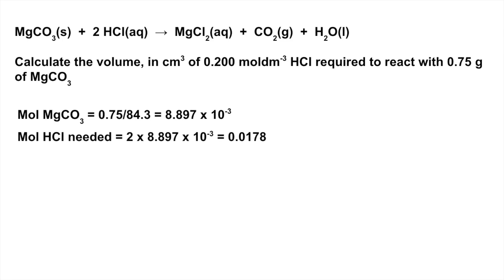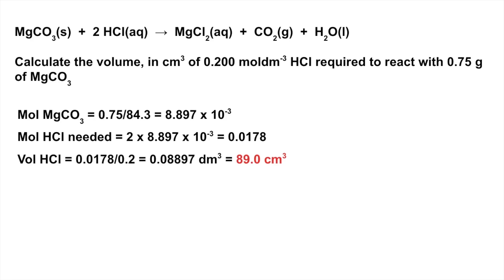Now we know the moles and we know the concentration, so we do volume equals moles divided by concentration. Remember that the answer comes out in dm³, so if we multiply by 1000 we get 89 cm³ to 3 significant figures.